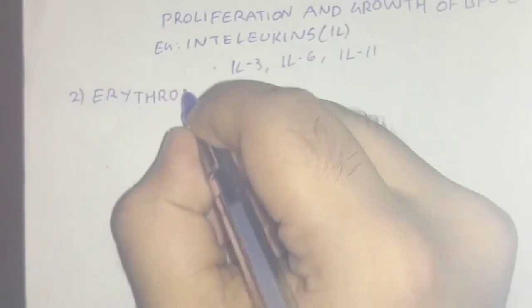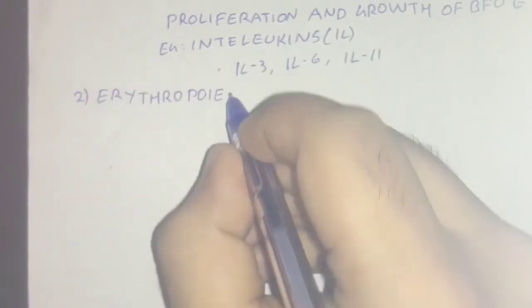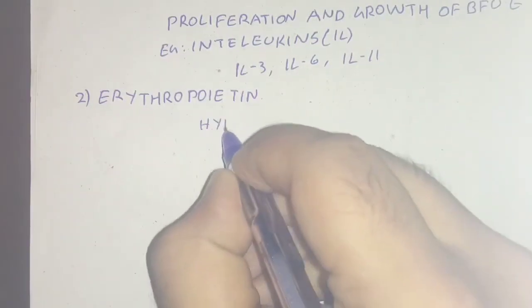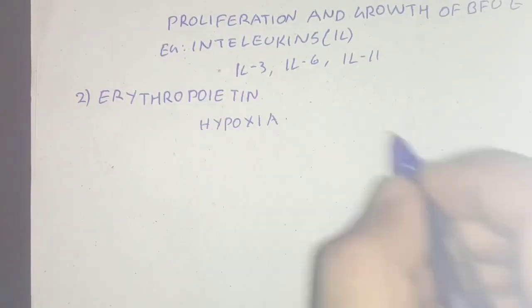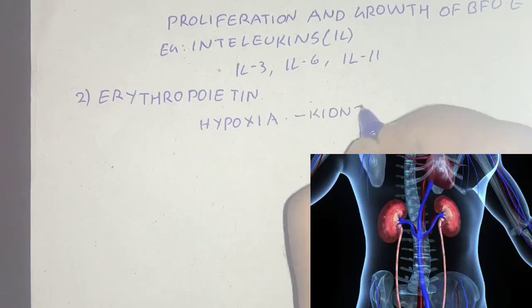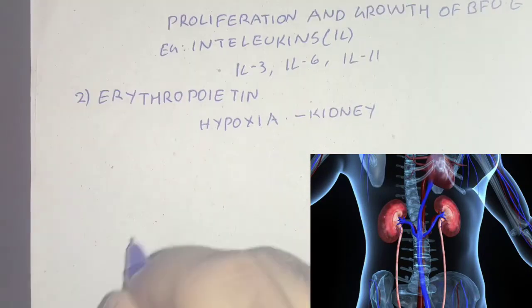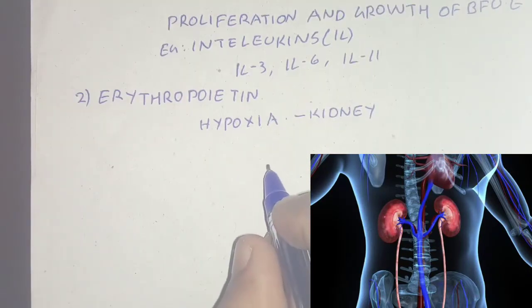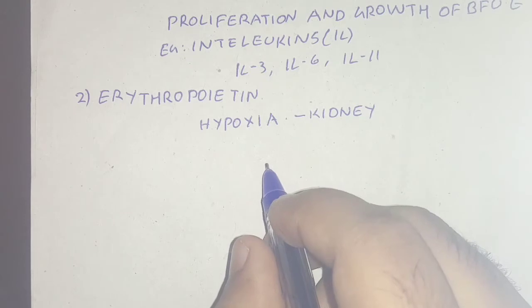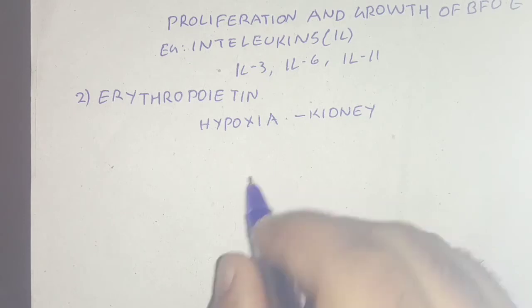Next is erythropoietin, or EPO. It is secreted mainly by the kidney in response to hypoxia. It stimulates the formation and release of red blood cells into circulation.